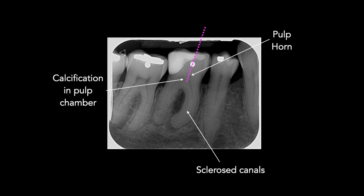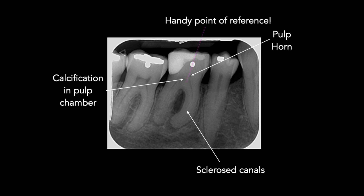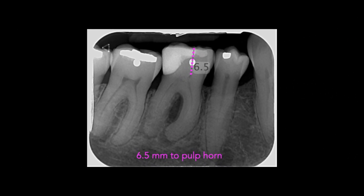The root canals are highly sclerosed and curved, so I'll be using lots of patency filing and copious irrigation to make sure that I don't block them during preparation. The buccal amalgam is going to be a very handy marker to locate the position of the access cavity and the direction towards the pulp horn. Measured on the digital radiograph we can see that it's 6.5 mm.